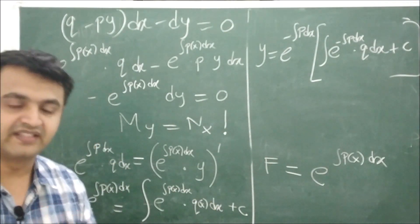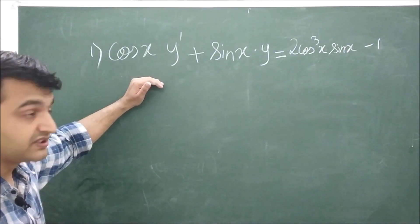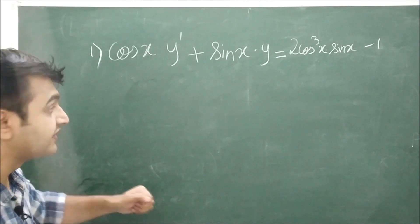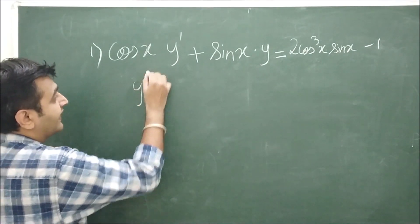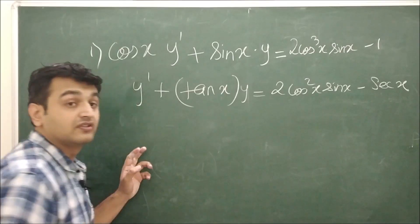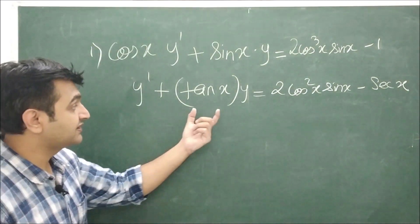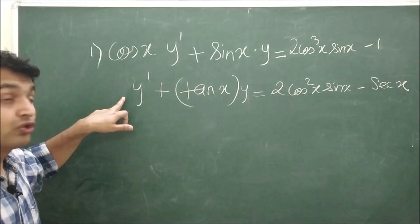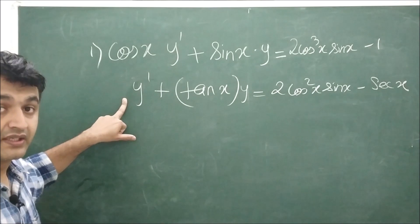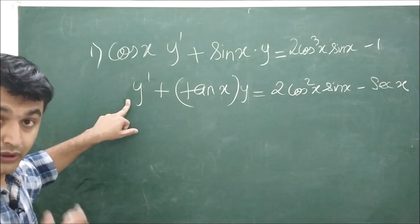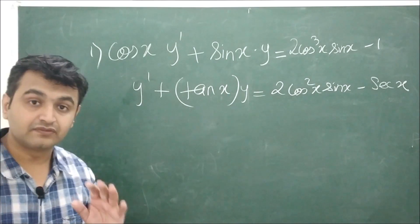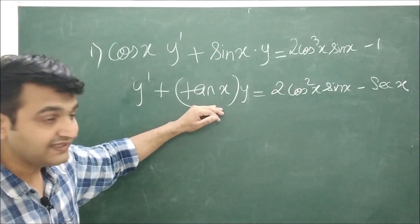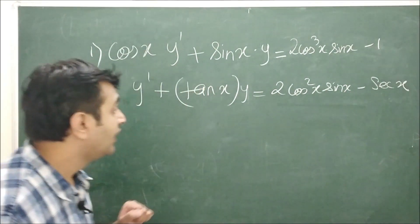Now let's work through an example. We have a first-order linear differential equation. Rewriting it by dividing by cos(x), we get dy/dx + (sin x / cos x)·y = Q(x), which matches the standard form dy/dx + P(x)·y = Q(x). Both P and Q are continuous functions of x, and the coefficient of dy/dx is 1.